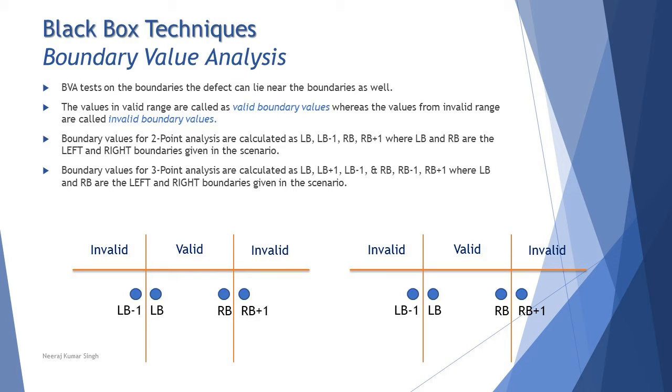When it comes to the boundary values, the three-point analysis is slightly different compared to two-point analysis. On the left side, the table you see is called two-point analysis where we take a value inside and outside on each boundary. There is a vertical line that shows the boundary of a particular range.